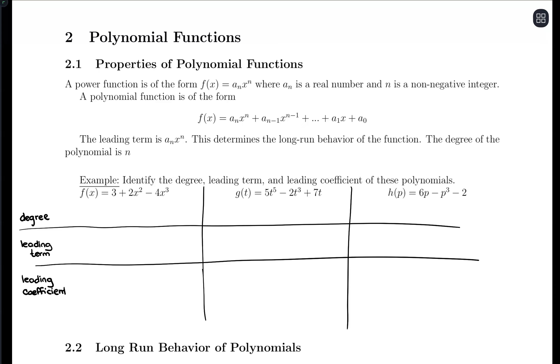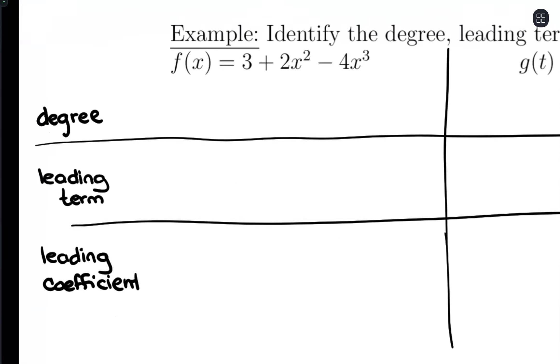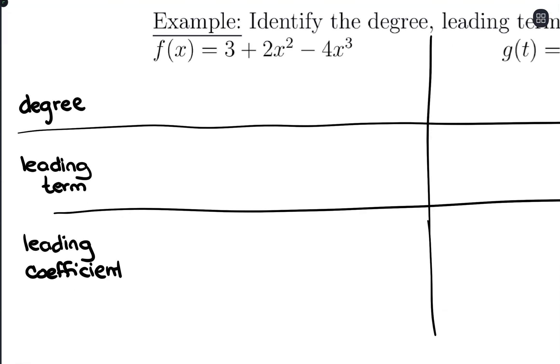Let's look at this first polynomial: 3 plus 2x squared minus 4x cubed. Where's the largest exponent occurring? It's at that negative 4x cubed. That exponent of 3 defines the degree of our polynomial. This is a degree 3 polynomial.